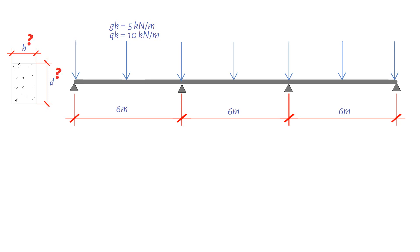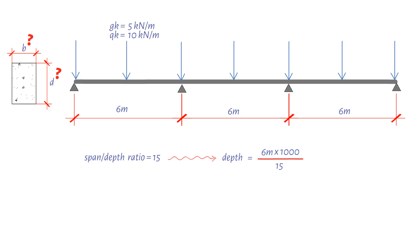First, we are going to find the effective depth. For continuous beams, the span-to-effective-depth ratio is 15. Hence, effective depth equals 6 meters times 1000 to convert it to millimeters, divided by 15. This gives us a value of 400 millimeters.